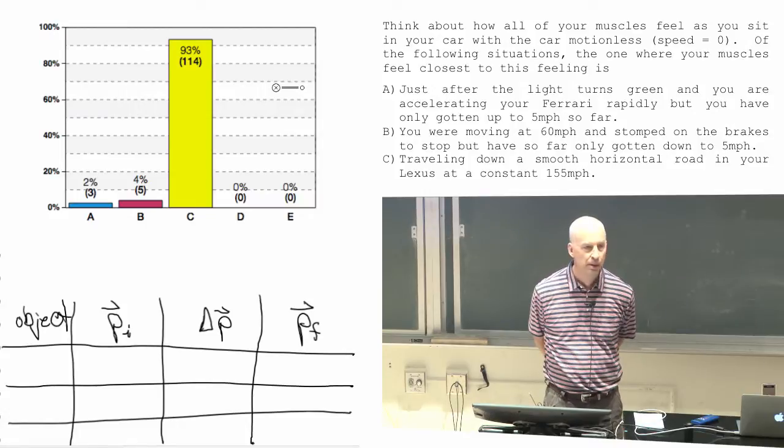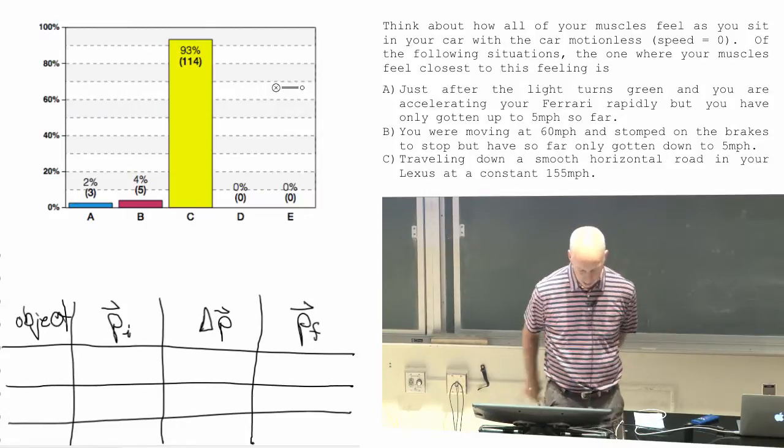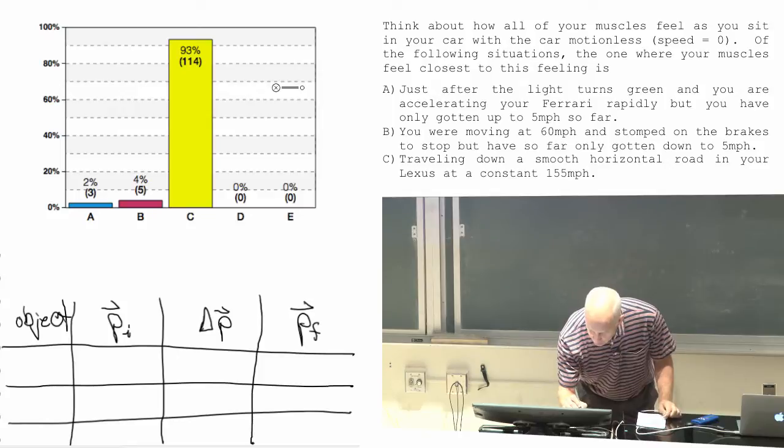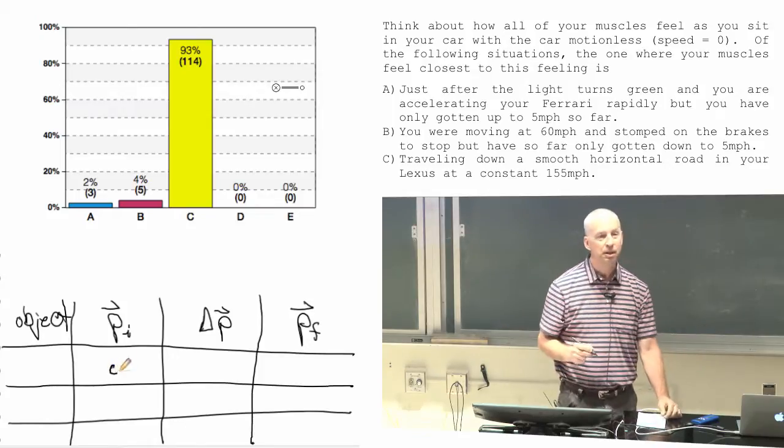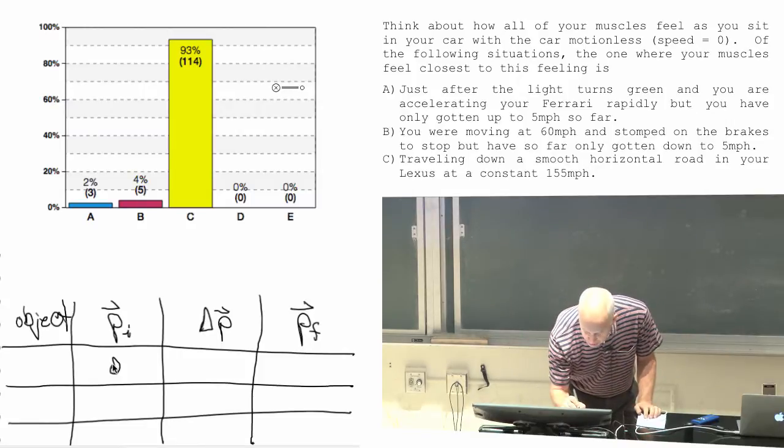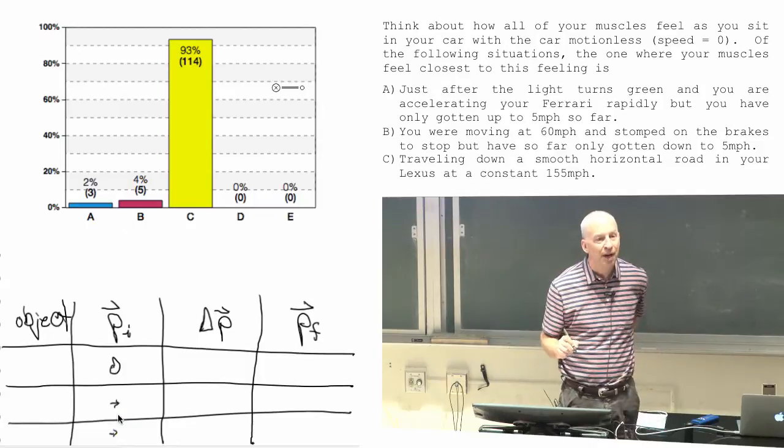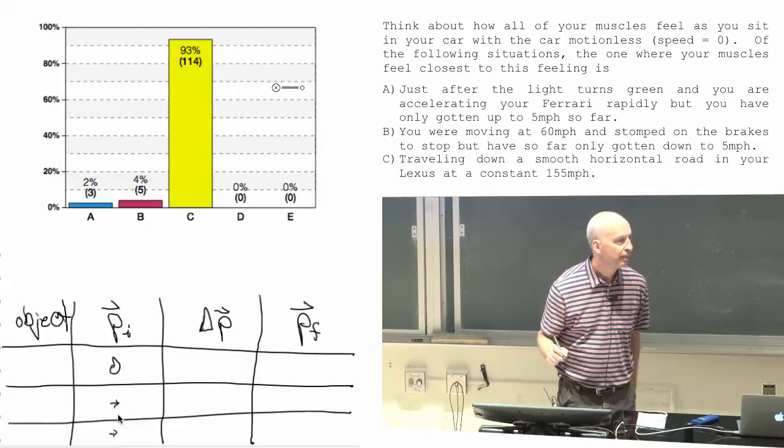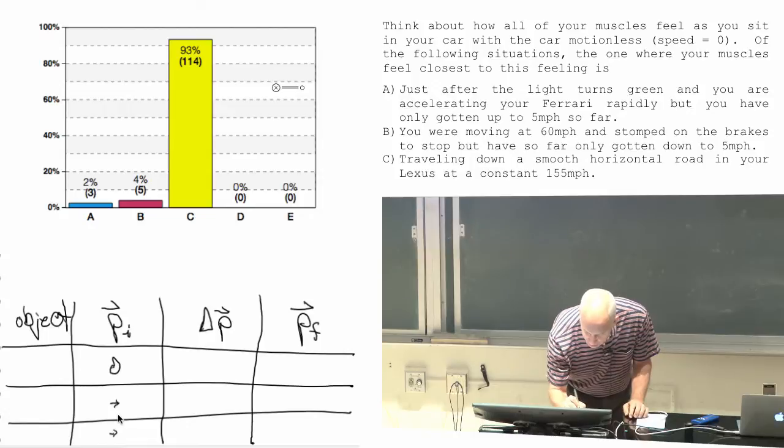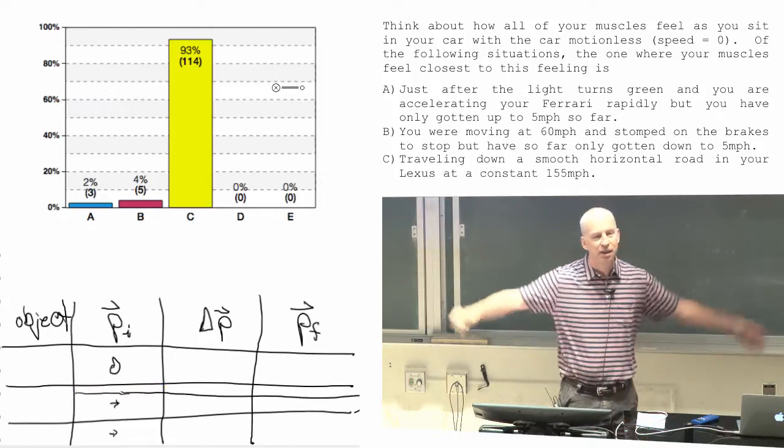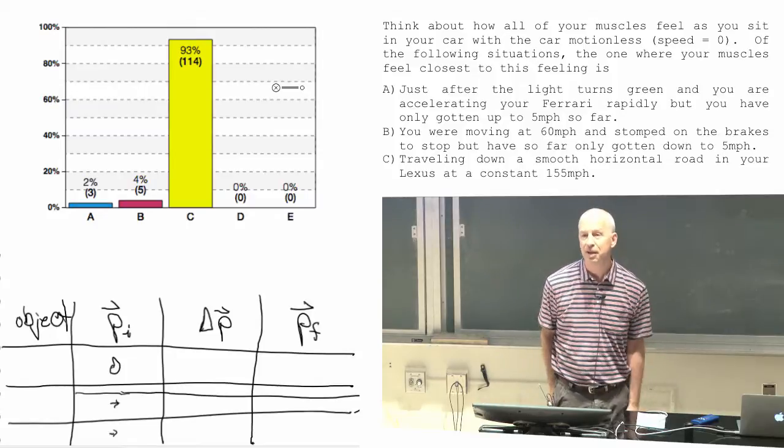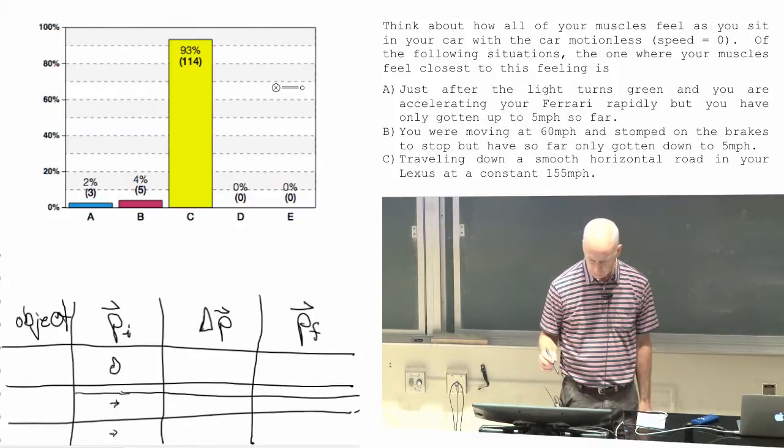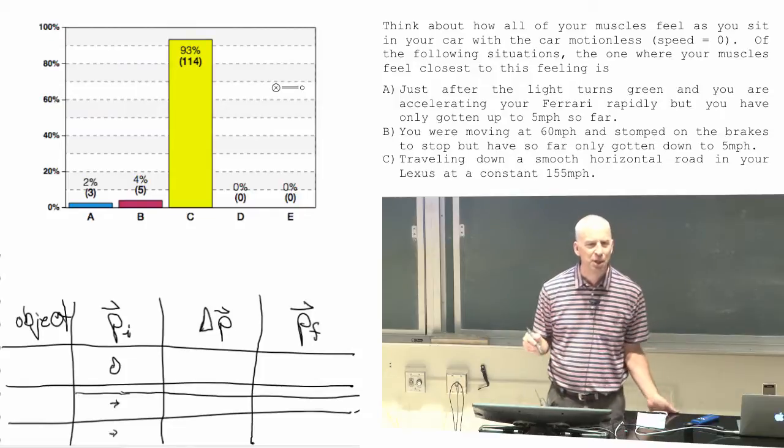The momentum certainly aren't the same. The momentum in one case is zero, because I'm not moving at all. In two cases, the momentum is really tiny because I'm going five miles an hour. And in the other case, I can't even draw it. The momentum is a giant vector because I'm going 155 miles an hour. So it can't be the initial momentum.